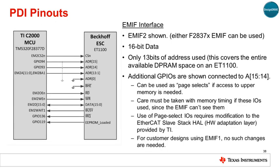This diagram shows the detailed pinout for the 16-bit asynchronous PDI using the MCU's EMIF, or external memory interface. Note that the F28377D has two EMIFs, and either can be used for this interface. The EtherCAT daughter card shown here uses EMIF 2. In this example, 13 address bits are used, which is sufficient to cover the entire available memory space of 12 kilobytes — which includes 4K registers plus 8 kilobytes of dual-ported RAM — on an ET1100 ESC, since each address references a 16-bit word.